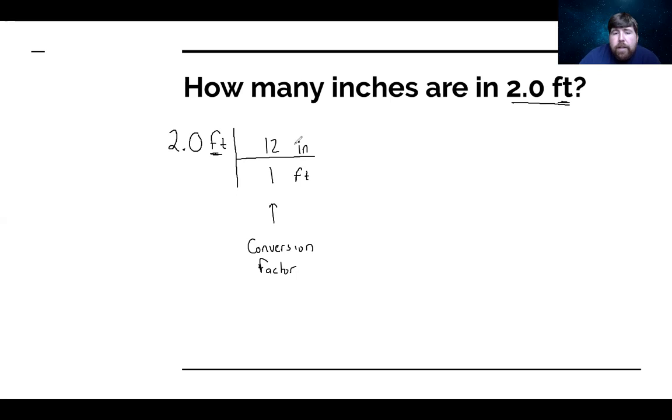The top statement is equal to the bottom statement. And what's nice about this is everything on top you're going to multiply by, everything on bottom you divide by. So feet divided by feet end up canceling out. And essentially we get 2.0 times 12 divided by 1, which equals 24 inches.